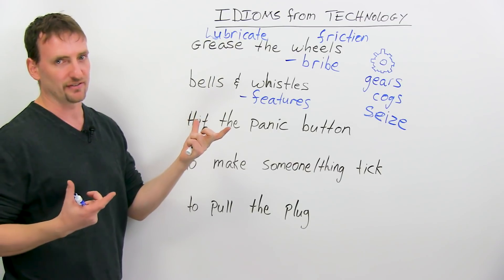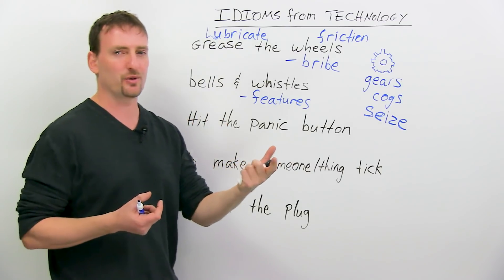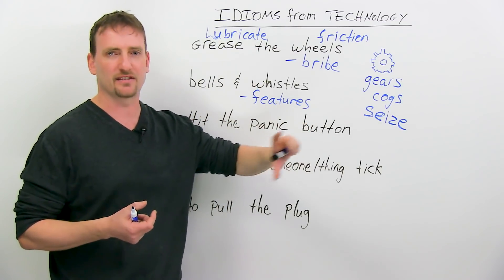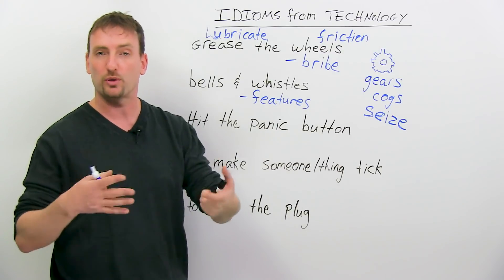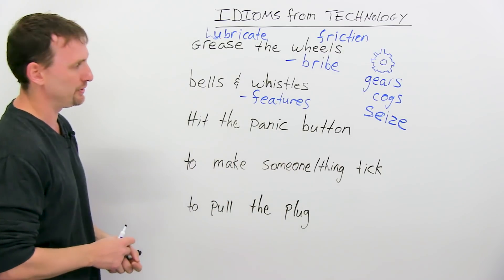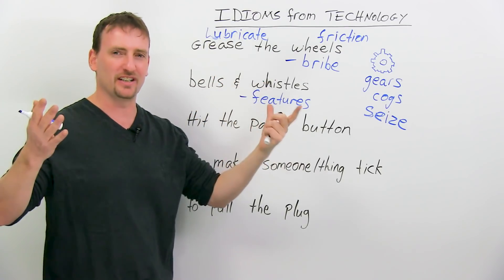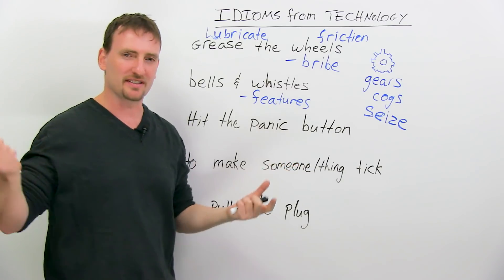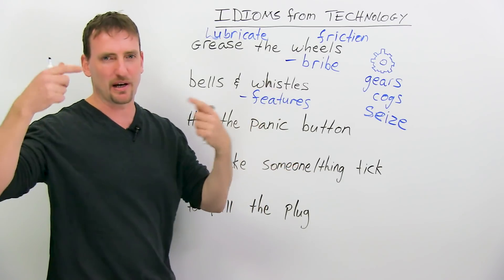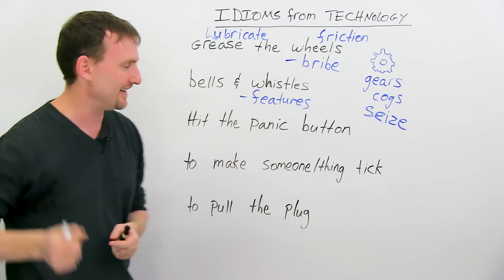So basically, all the good stuff. If you go to an appliance store, you want the machine that has the most bells and whistles, the most cool features that you can put on it. Again, this is from old-time industrial machines that worked on steam, so the steam created the whistle and then the bells for when the process was done.